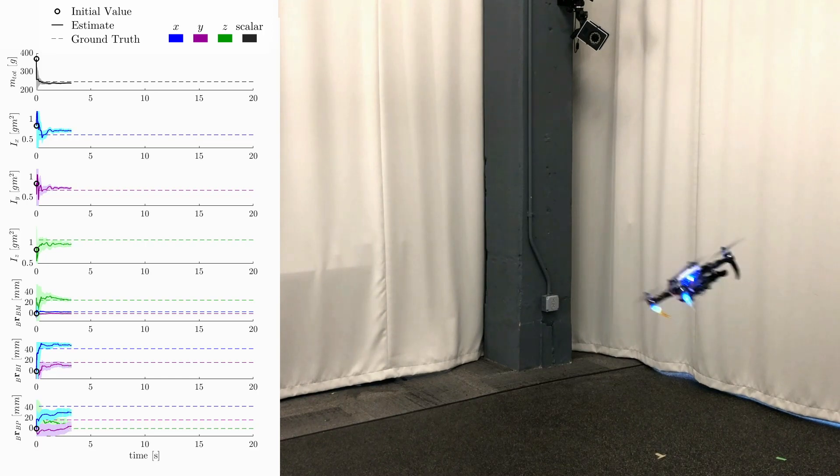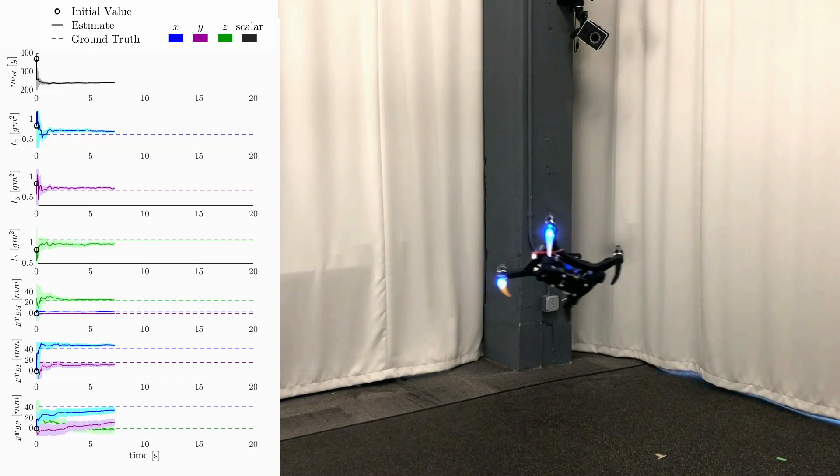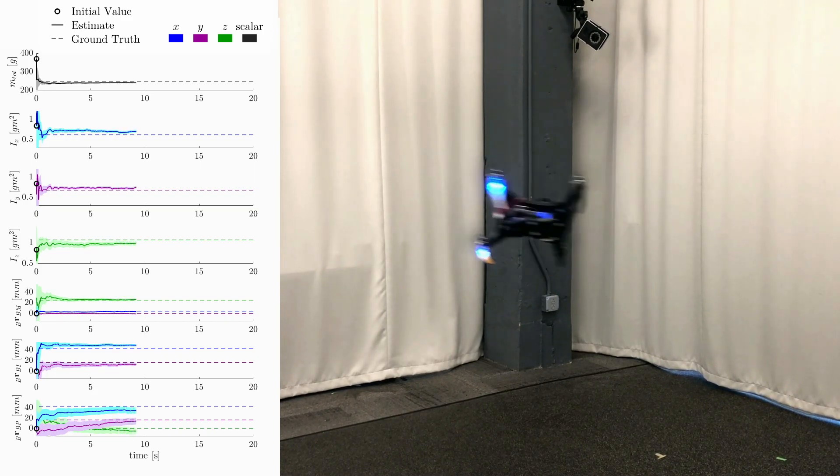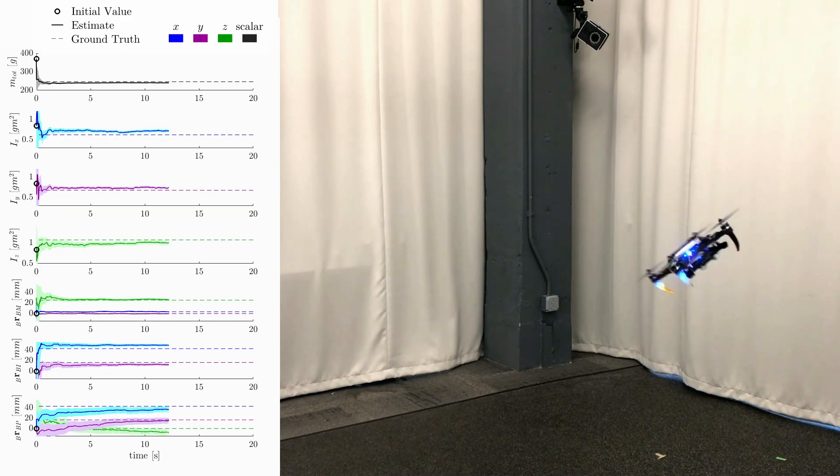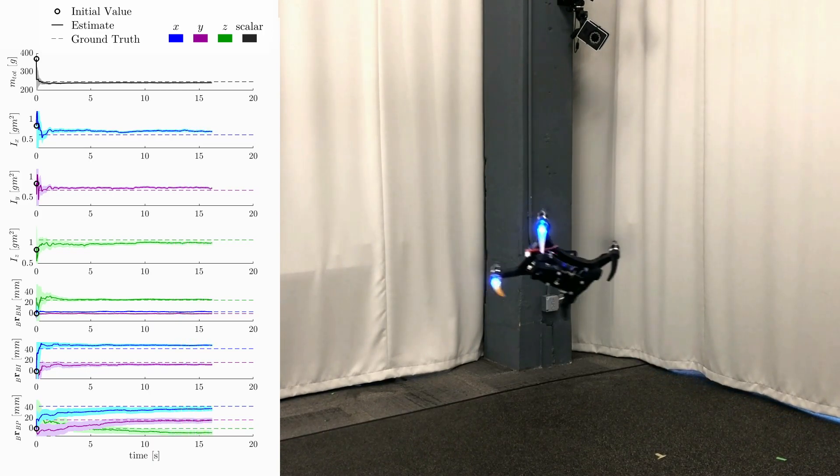As the multirotor executes a Lissajous trajectory, we see that from their initial values indicated by the circle, the estimated parameters rapidly approach ground truth and maintain accuracy for the duration.